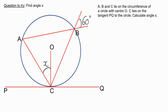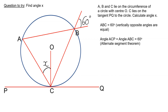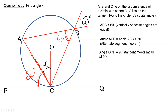Angle ABC is going to be 60 degrees because vertically opposite angles are equal. Angle ACP — because of the alternate segment theorem, the tangent meets this chord here, so this angle is also 60 degrees — whatever angle is made here is identical to the angle in the alternate segment, which is 60. We can then use the fact that tangent meets a radius at 90 degrees, so OCP is 90. To get X, I do 90 take away 60, which is 30 degrees.